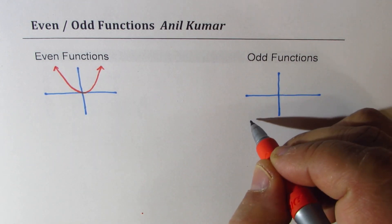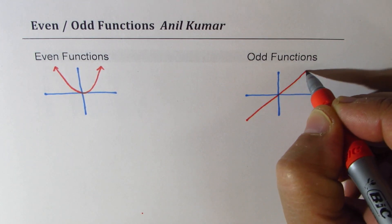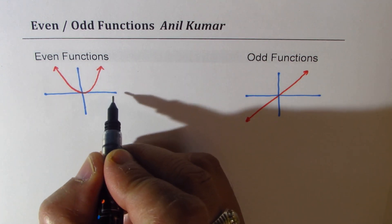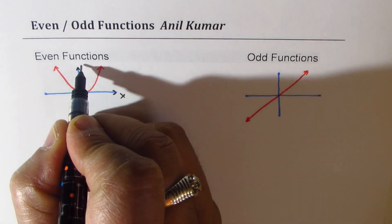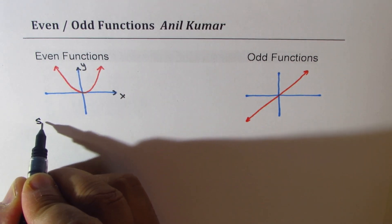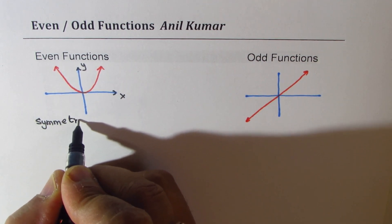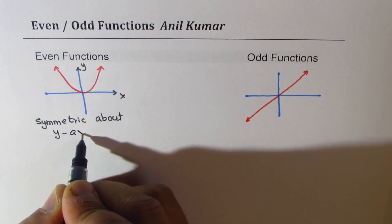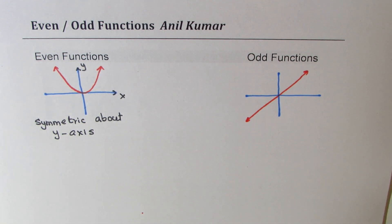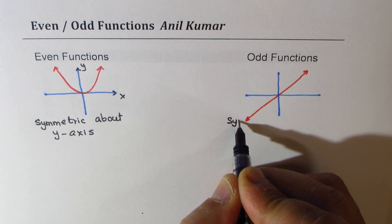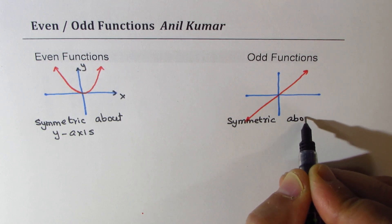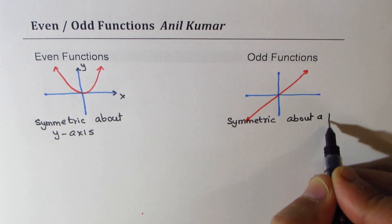For the odd function, the simplest example is a straight line, y equals to x. These are even and odd functions. If the function is an even function, then it is symmetric about the y-axis — that is how you could see from the graph. If it is an odd function, then the symmetry is about the origin — about a point, basically.